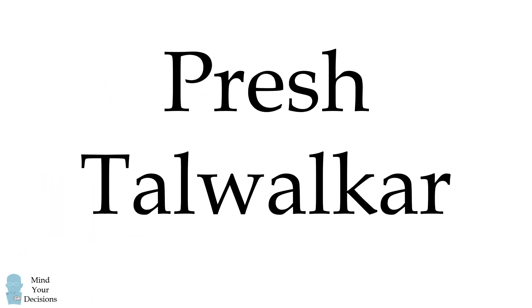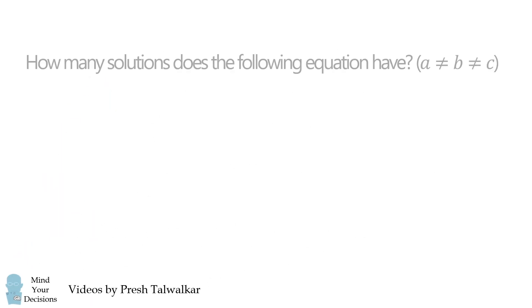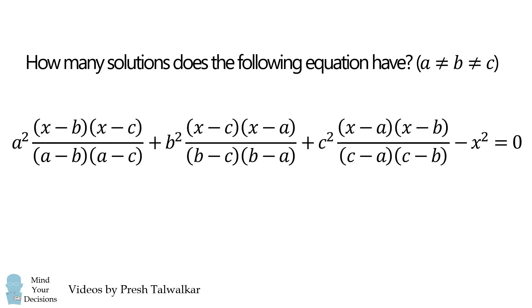Mind your decisions. I'm Presh Talwalkar. How many solutions does the following equation have for a, b, and c being distinct numbers? Here's the equation — it's the sum of four different terms.